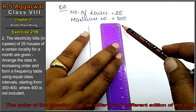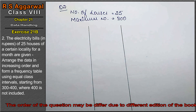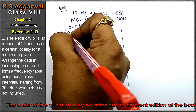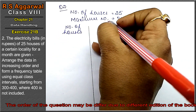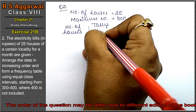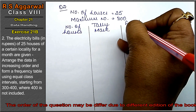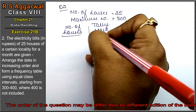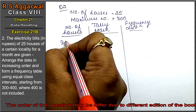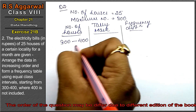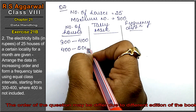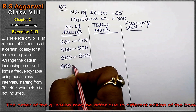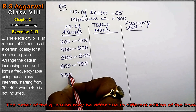I have a table — this is the number of houses and the frequency distribution. We will set up the class intervals: 300 to 400, 400 to 500, 500 to 600, 600 to 700, and 700 to 800.